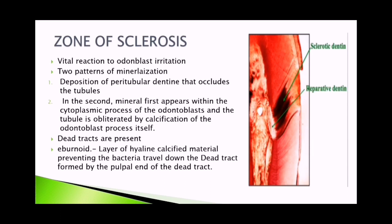Ebner's layers are layers of hyaline calcified material preventing bacteria from travelling down the dead tracks. These are formed by the plugging of the dead tracks. Above the dead tracks, we have the Ebner's layer — a layer of hyaline calcified material which prevents carious progress to the pulp. This is a reactionary action by the pulp.